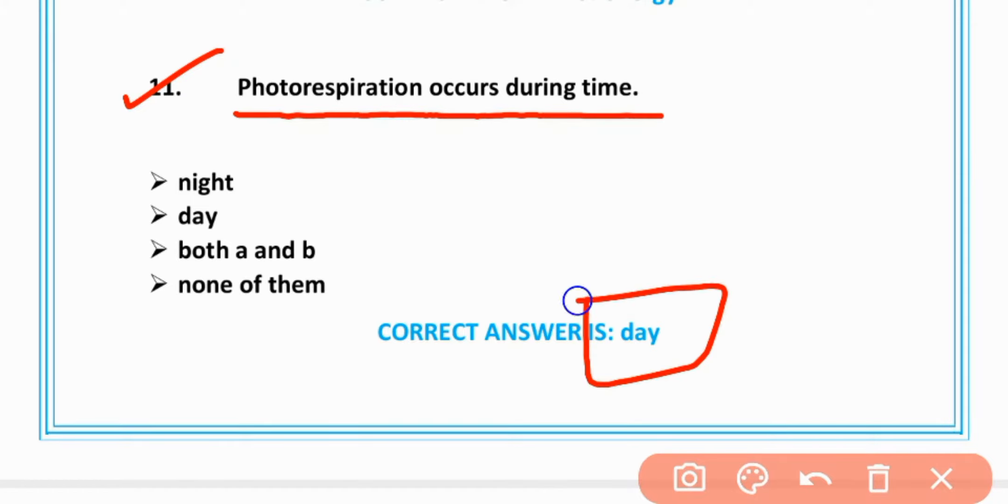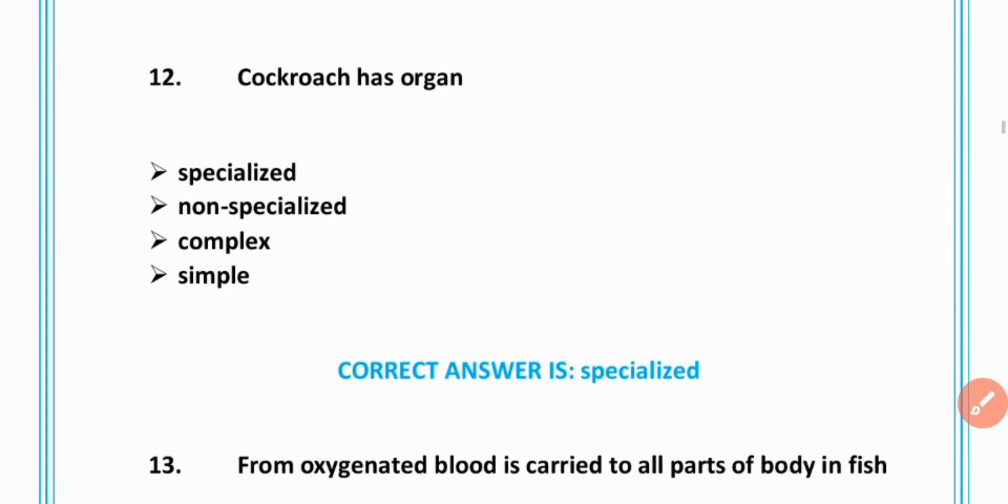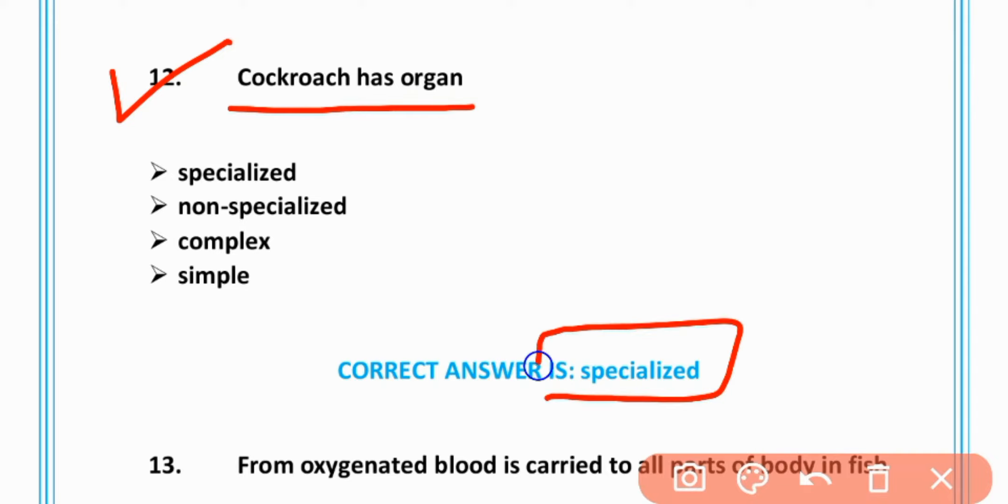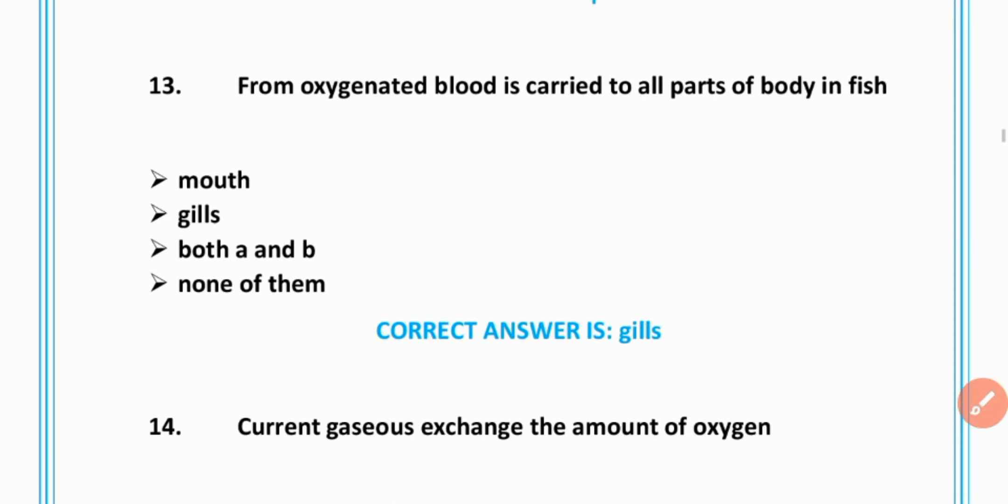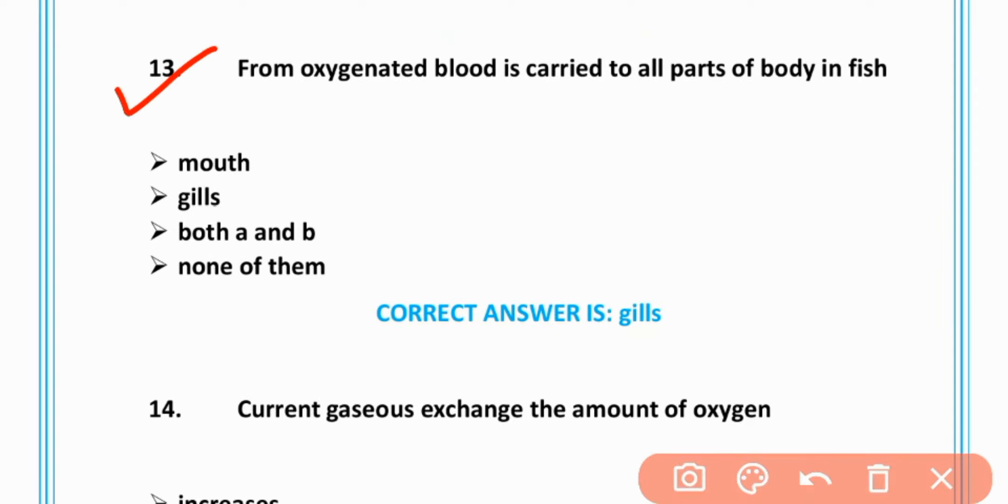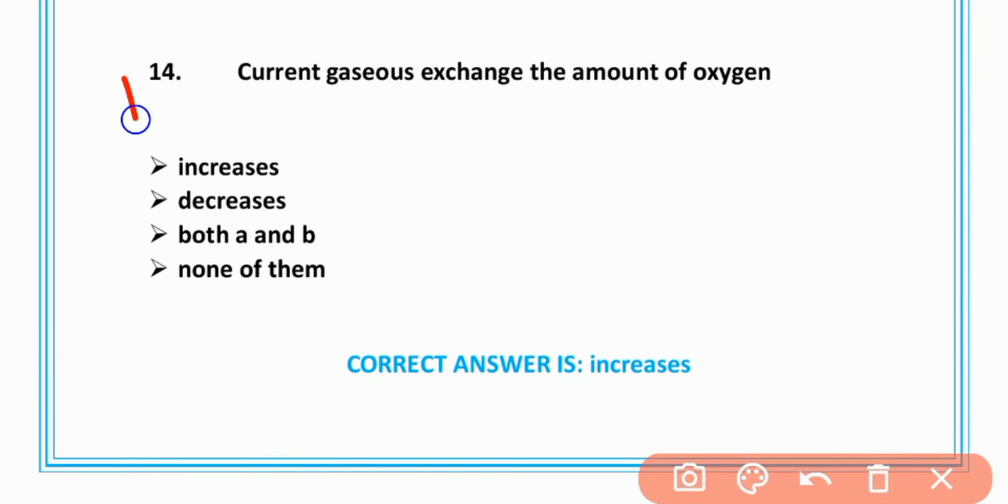MCQ number 11: Photorespiration occurs during daytime, B is correct. MCQ number 12: Cockroach has specialized organ, option A is correct. MCQ number 13: Oxygenated blood is carried to all parts of body in fish by gills, option B is correct.